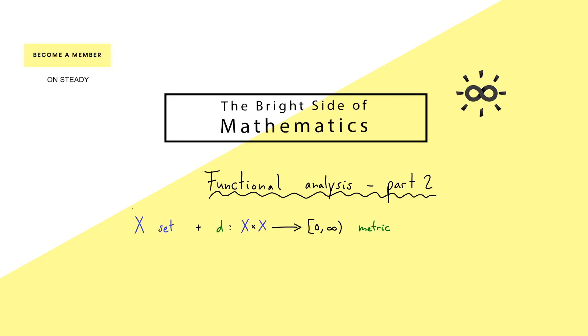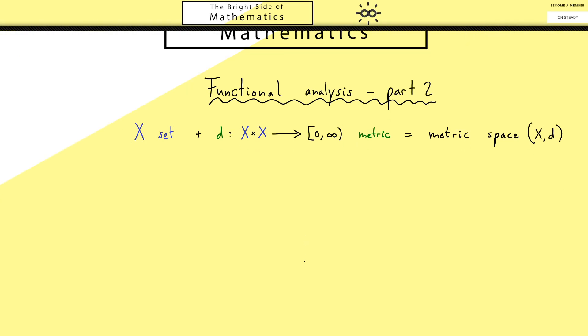We've already learned if we have a set X and a metric for this set, then we call this a metric space. In a metric space one can now generalize a lot of notions you may know from a real analysis course. For example, we can define sequences, limits, accumulation points and so on. Of course this is what we will use a lot in this series. However, before we do that, let's talk about some examples.